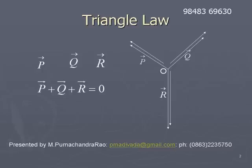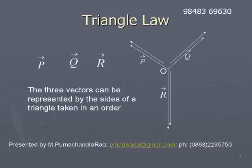If three vectors p bar, q bar, r bar acting at a point O and their sum is zero — p bar plus q bar plus r bar is equal to zero — then these three vectors can be represented by the sides of a triangle taken in an order.